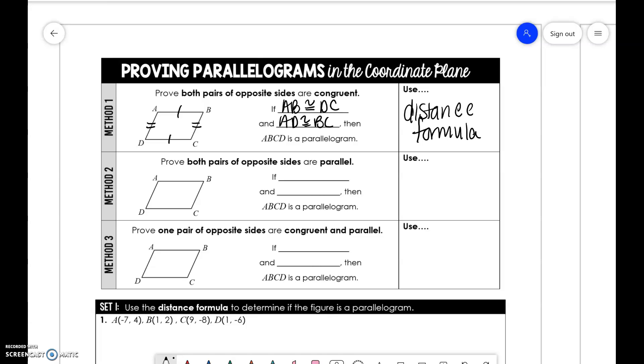The second method is using the slope method. By using the slope formula, we need to show that AB is parallel to CD and AD is parallel to BC. That's another qualification of being a parallelogram: having opposite sides parallel to each other. If they have the same slope, that means they're parallel, so it's a parallelogram.